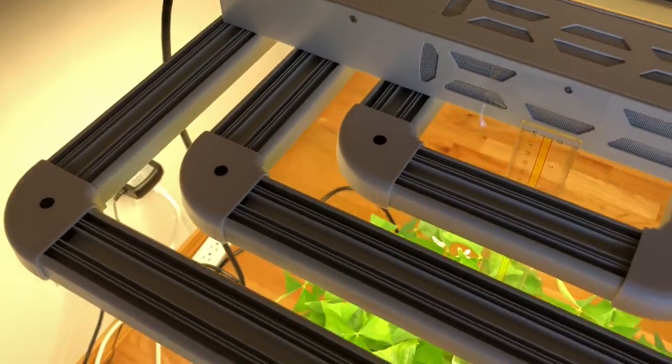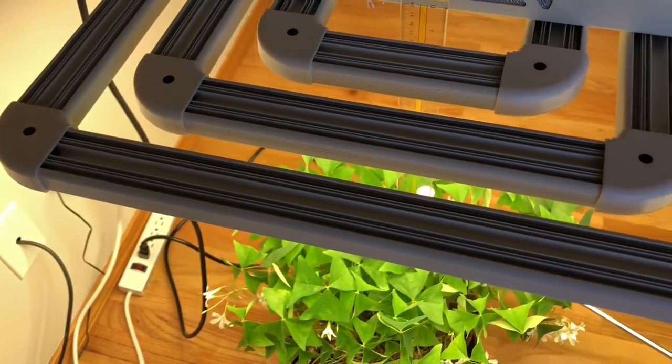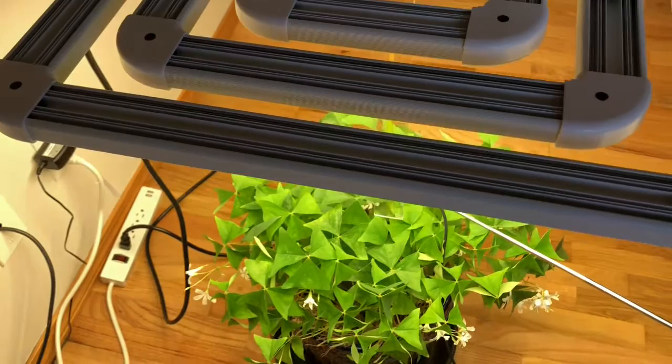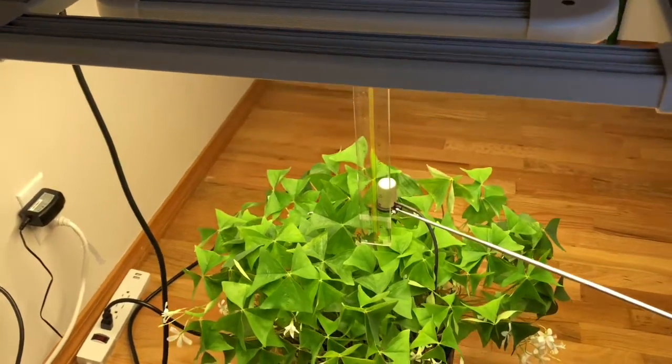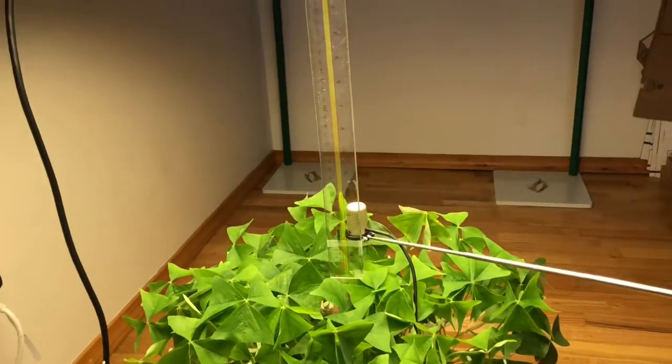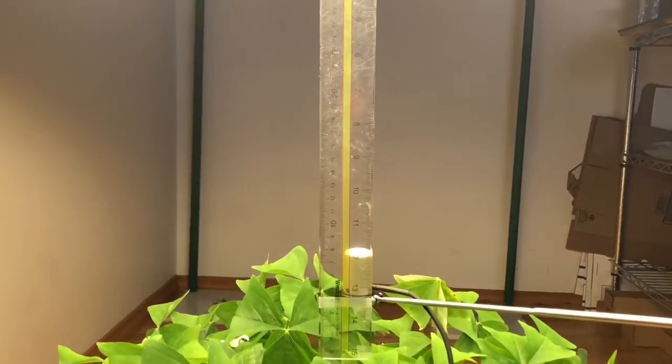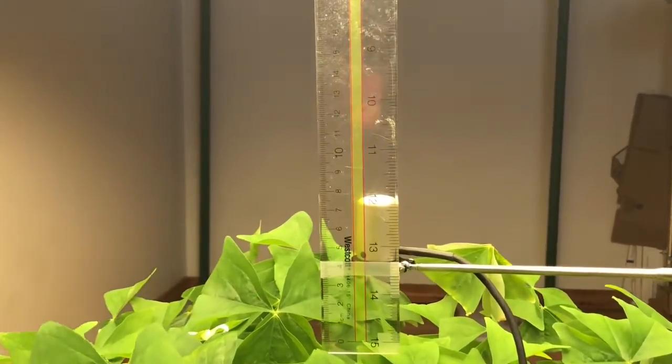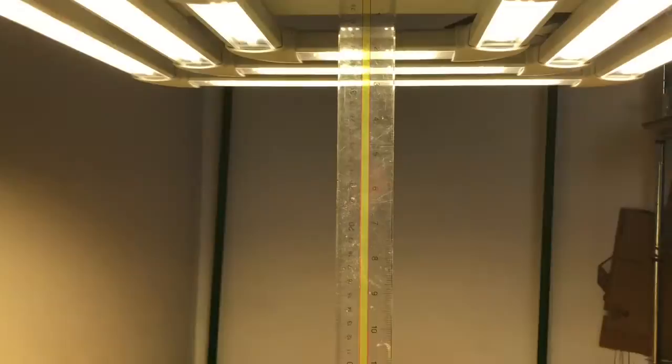Just going to do a quick overview of the FGI square 3 and the photosynthetic light levels that it produces. We've set up an Apogee MQ500 PAR sensor exactly 12 inches below the center of the diodes. This ruler is hanging off the center of the light so you can see the measurement.